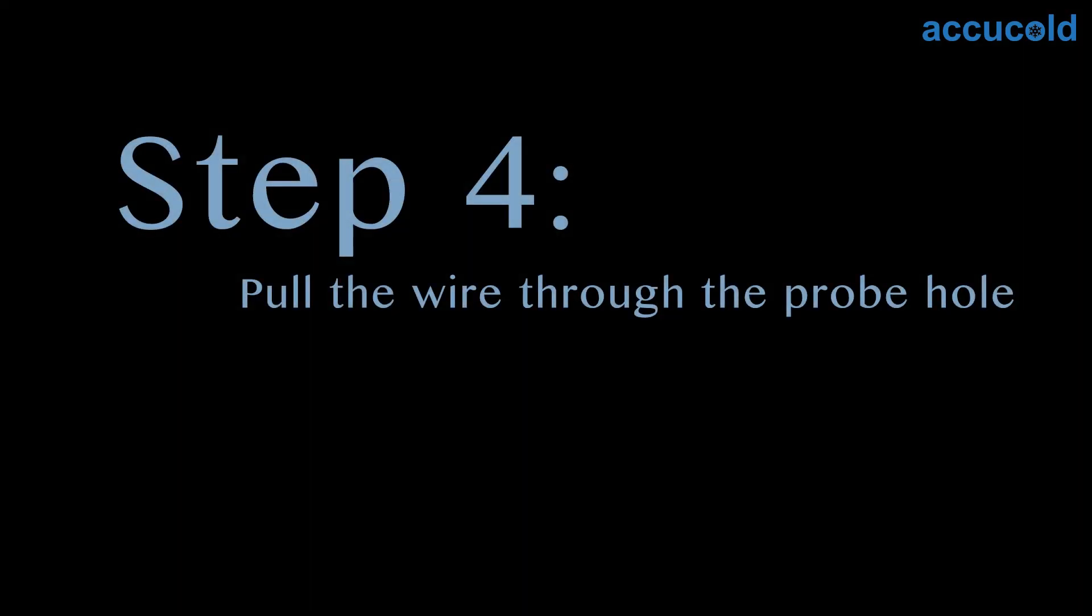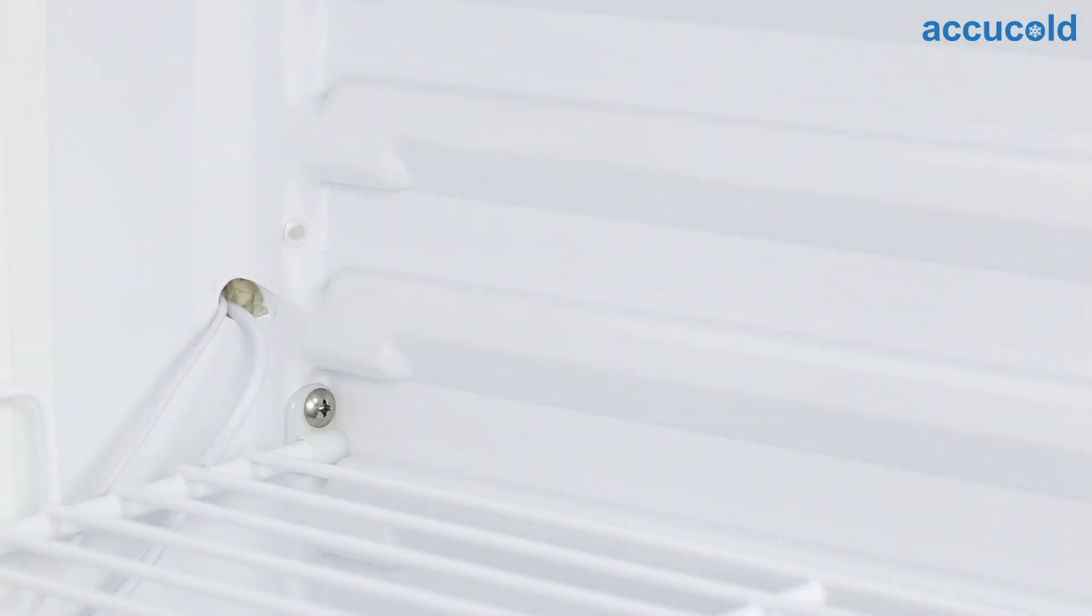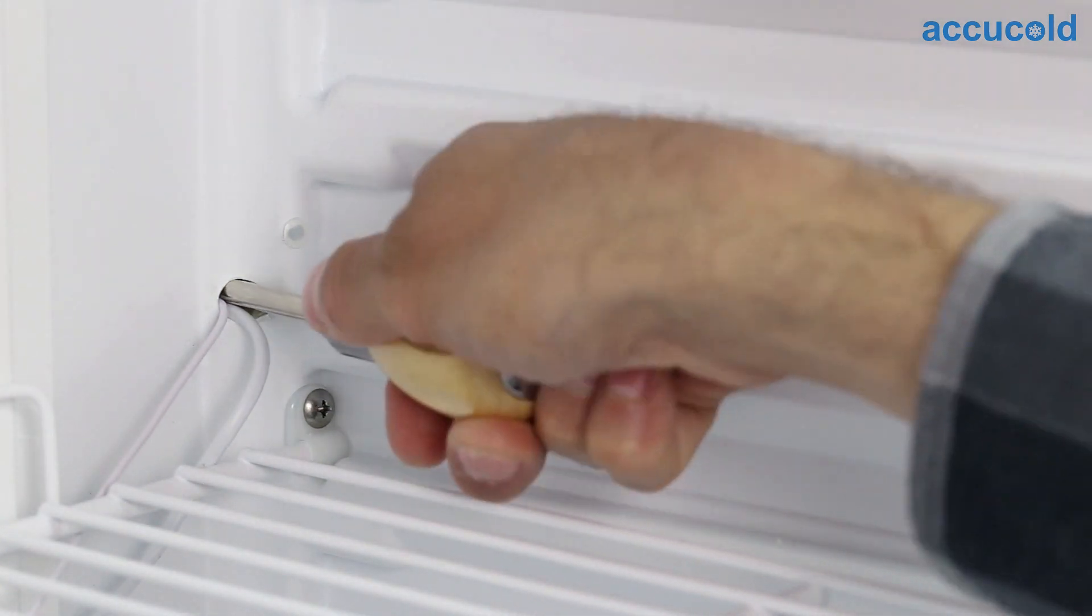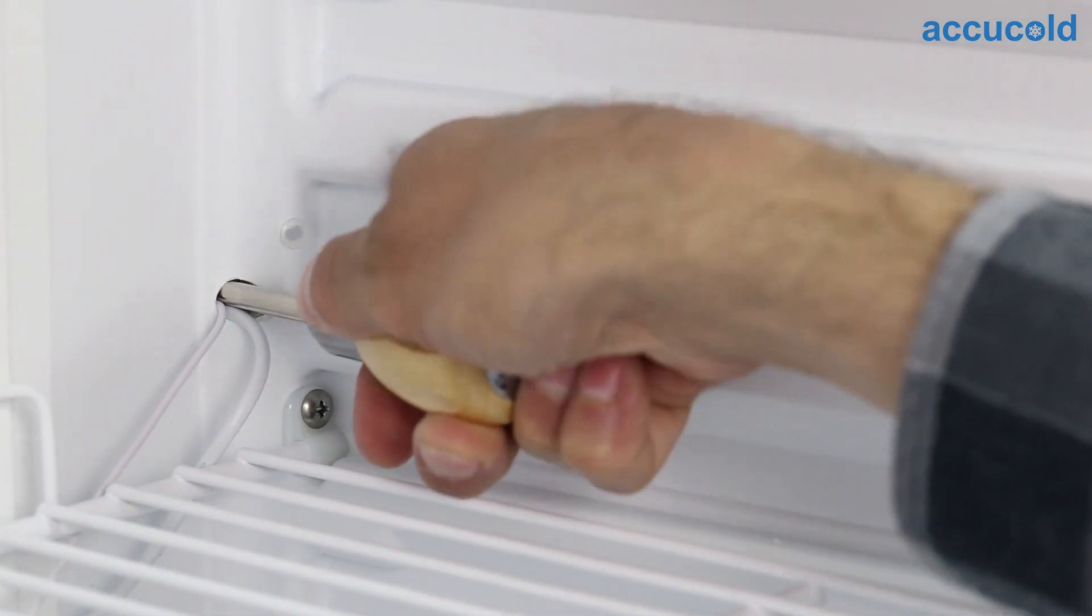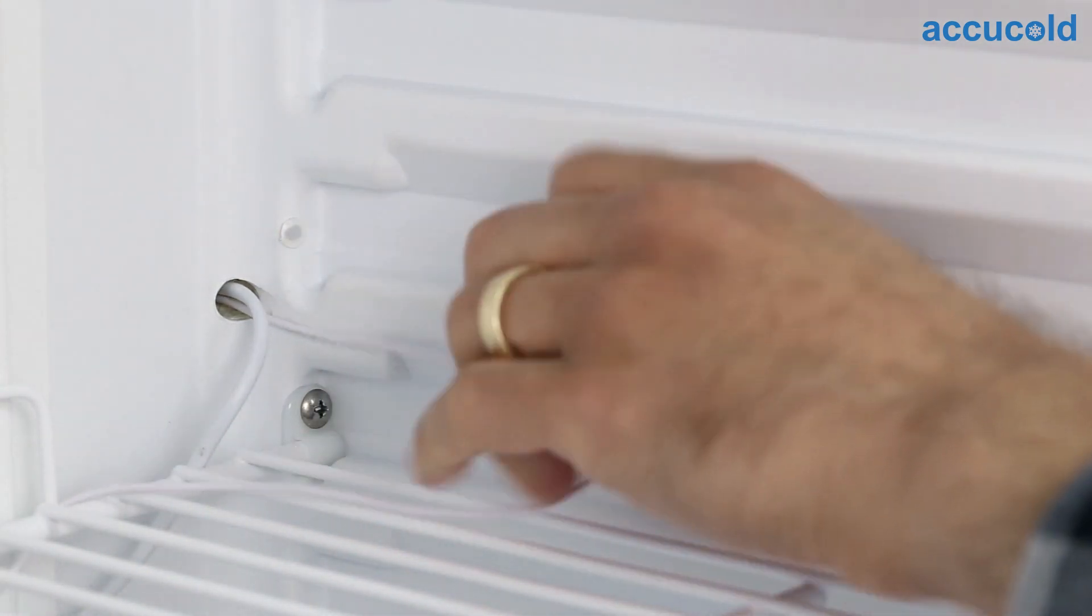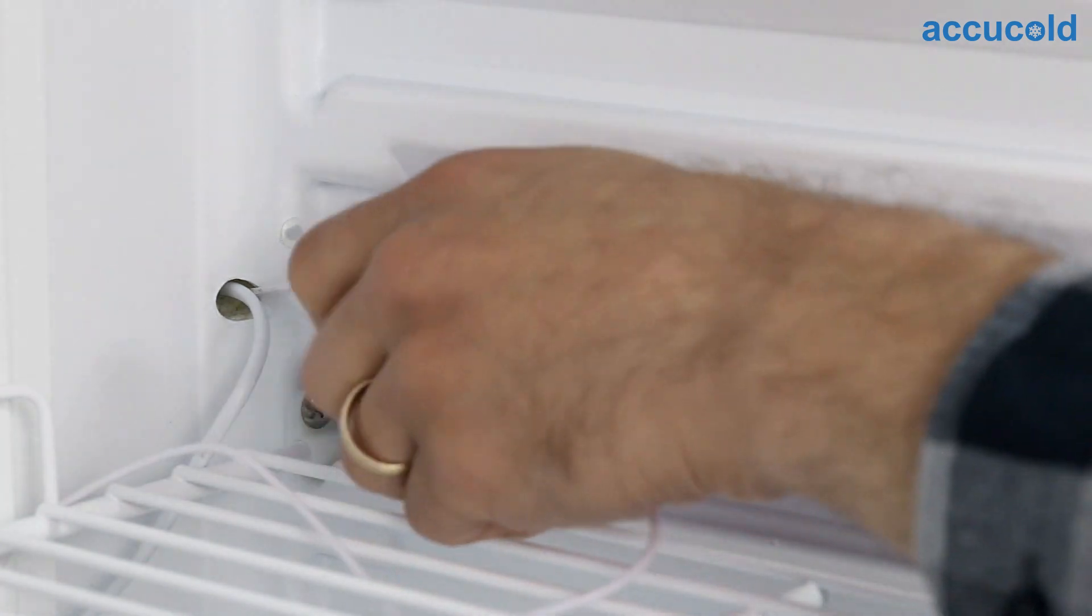Step four, pull the wire through the probe hole. Locate the hole inside the appliance that allows the probe wire to pass through to the back side of the unit. Using a straight pick, puncture the seal that secures the wire into the hole. Pull the wire through the hole, freeing the probe and wire from the appliance.